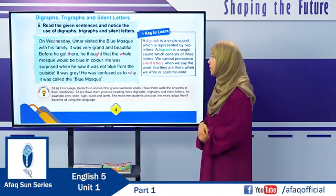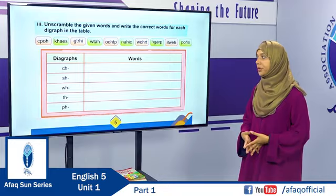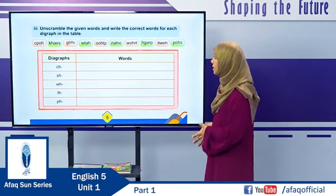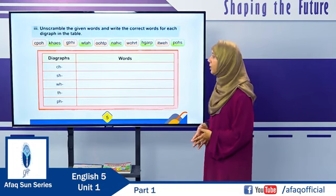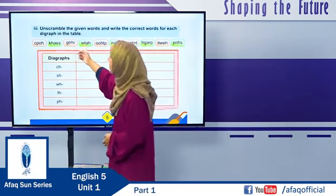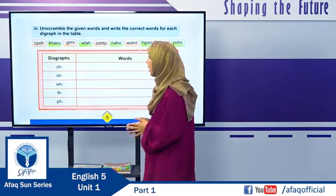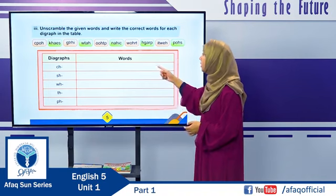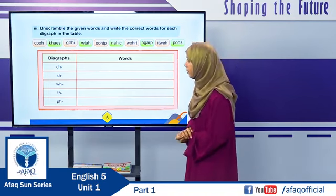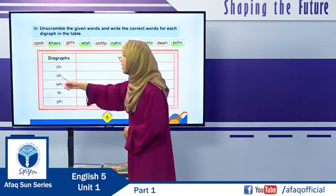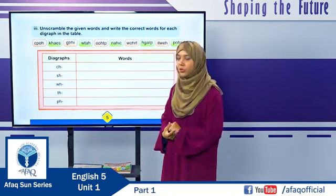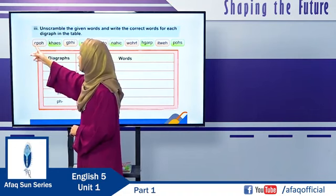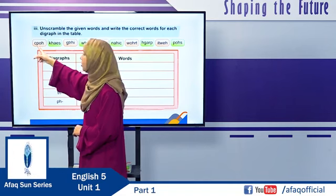Now let's move to the next activity. Turn to page 5 of your textbook. On this page there is an activity where you have to unscramble the given words and write the correct words for each digraph in the table. These are scrambled words that each contain a digraph. Let's do the first one together. Can you find a word with the digraph CH? If we unscramble this word, it is CHOP — C-H-O-P. The word 'chop' has the digraph CH.